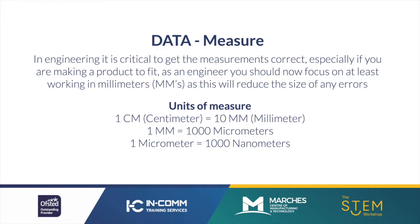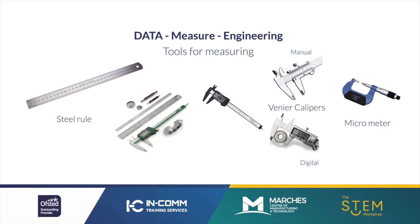Engineers typically within industry work in at least micrometres. To give you a breakdown of the different units of measure: a centimetre is equivalent to 10 millimetres, one millimetre is equivalent to a thousand micrometres, and one micrometre is equivalent to a thousand nanometres. Here are some examples of the hand tools used in industry to take measurements. Typically in an engineering department you would use a steel rule to capture and mark out measurements to the nearest millimetre.